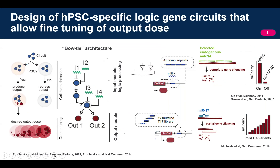As a proof of principle, we set up a study to show the performance of these circuits in human pluripotent stem cells and came up with a design based on a bow-tie architecture that decouples the input processing — recognizing multiple microRNAs — from an output module that controls multiple genes. The sensor module uses four complementary repeats of microRNA targets that can be placed on any sensor element or transgene to achieve full repression of downstream transgenes.